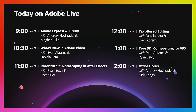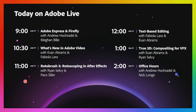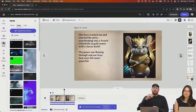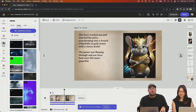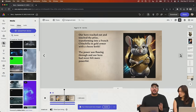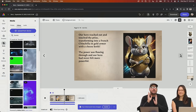Here is our schedule for the rest of the day. At 10:30 we have a 'What's New in Video' where we'll give an overview of everything that's been announced, then we get into the weeds with Roto Brush 3, text-based editing, and True 3D. Then we end the day with Andrew and Nick for Office Hours. If you want to join Office Hours, we're talking about Adobe Max and doing some branding promo for the Max Bash.